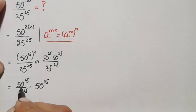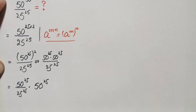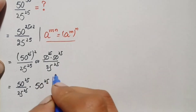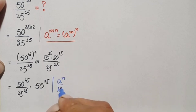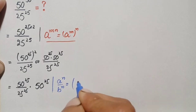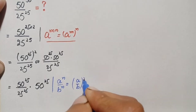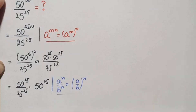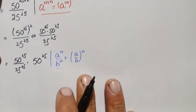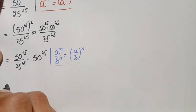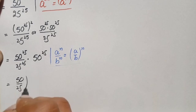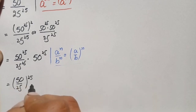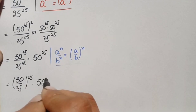Looking at this first part, the numerator and denominator both have the same power. So here we will use the same-power division exponential identity: a raised to power n divided by b raised to power n equals a divided by b, whole raised to power n. Using this identity, this becomes 50 divided by 25, whole raised to power 25, times 50 raised to power 25.